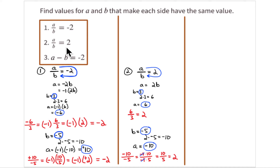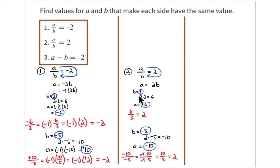Problem 2 is essentially the same, but the ratio is positive 2, not negative 2 — a little easier since you don't have to take the opposite unless you choose negative values. The ratio of a to b is 2, so a equals 2 times b. Choose b as positive 3: 2 times 3 is 6, so a is positive 6. Plug it in: 6 divided by 3 equals 2. That works.